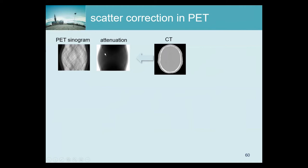That conversion is necessary because the CT uses photons of much lower energy. Then we get that attenuation sinogram, and here white means 1 — no attenuation — and all the dark values are smaller than 1 because there is a lot of attenuation there. So this represents the fraction of photons surviving the attenuation.